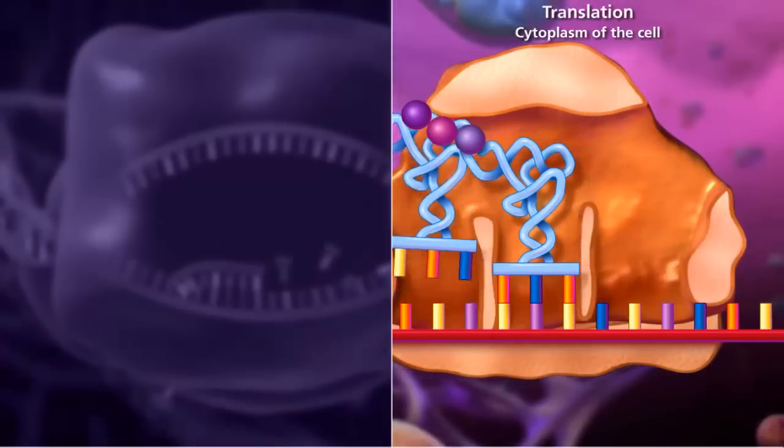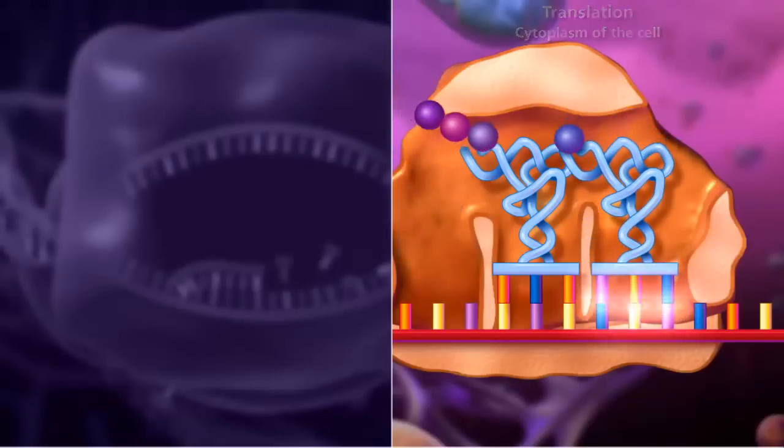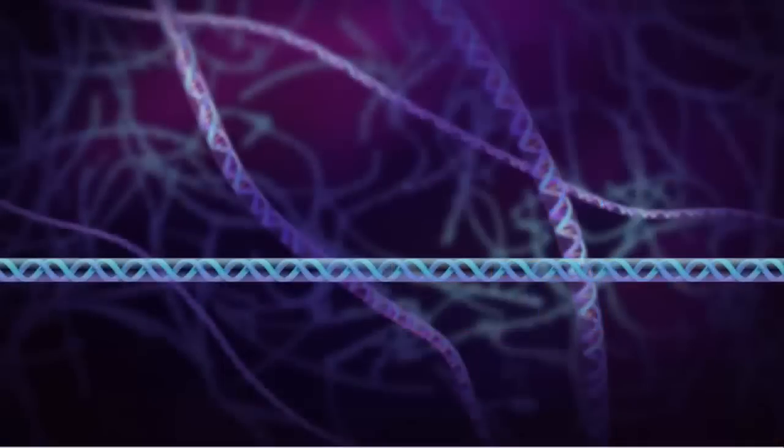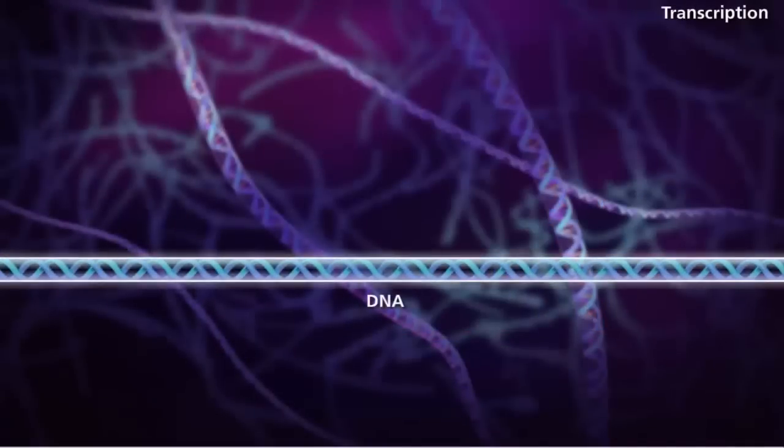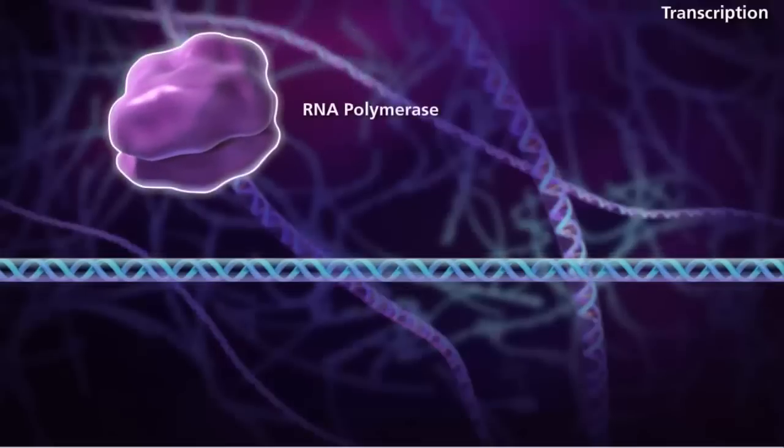During transcription, the DNA in the gene is used as a template to make a messenger RNA strand with the help of the enzyme RNA polymerase. This process occurs in three stages: initiation, elongation, and termination.